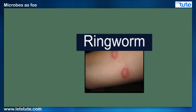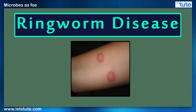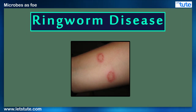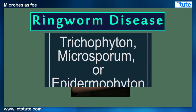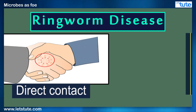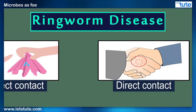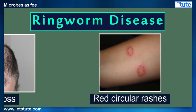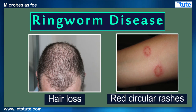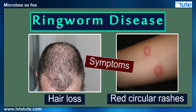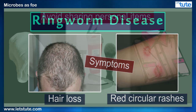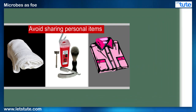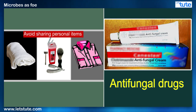Let's study the ringworm disease. It is caused by any of the three species of fungi and spreads mostly through direct or indirect contact. Red circular rashes over the skin and hair loss are among the more common symptoms. In order to prevent these infections, one should avoid sharing personal items and should use anti-fungal drugs if an infection does occur.